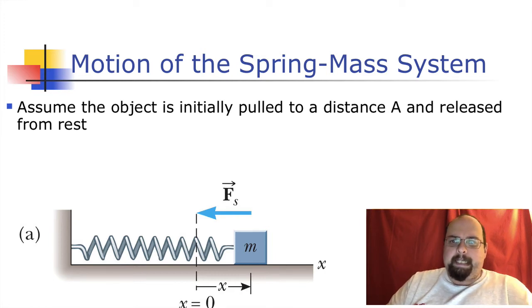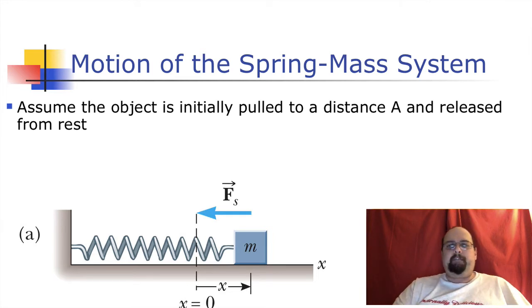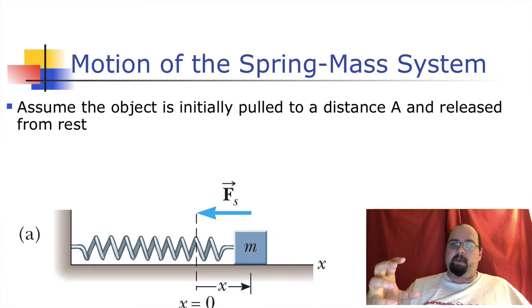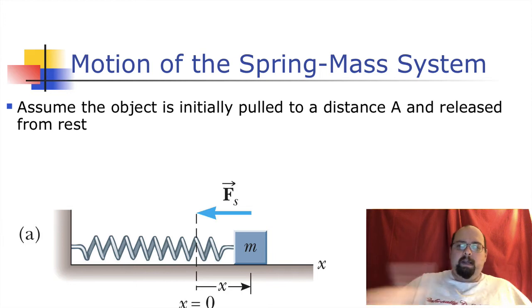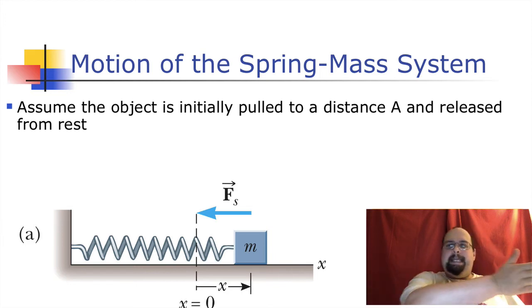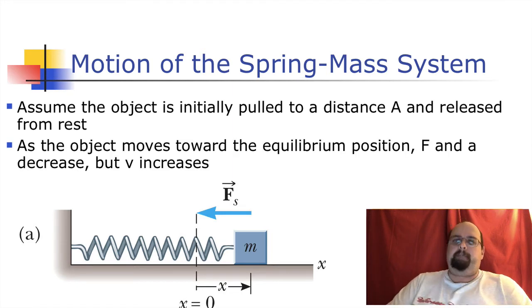So if you pull at a distance a, we use the letter a to represent amplitude and release it from rest. If there's no friction and there's no heat energy lost in the spring, then it will have a potential energy out here, one half kx squared. It all turns into kinetic when it gets to x equals zero and then compresses again, one half kx squared. And it will go back and forth between a and negative a forever if there's nothing pulling energy from the system.